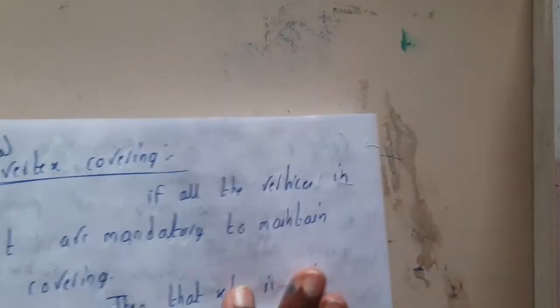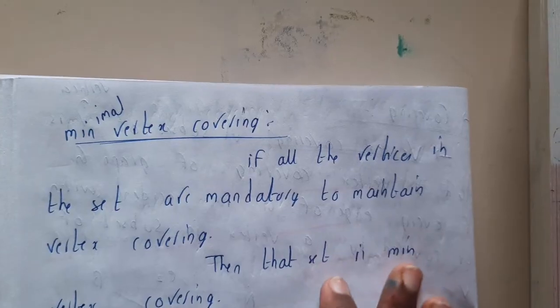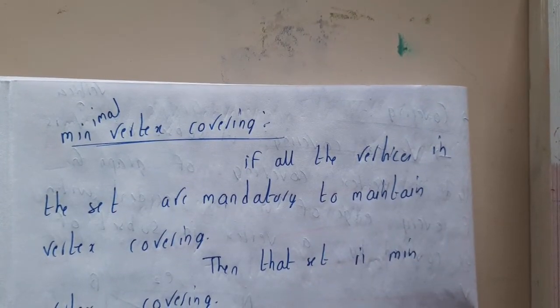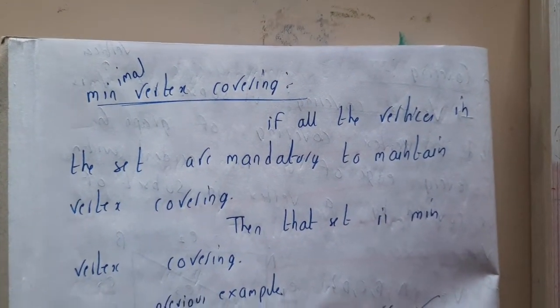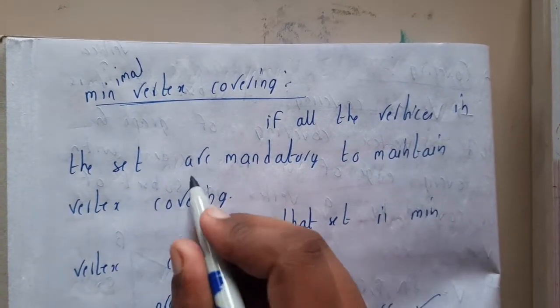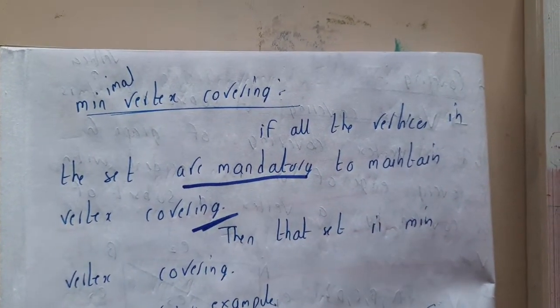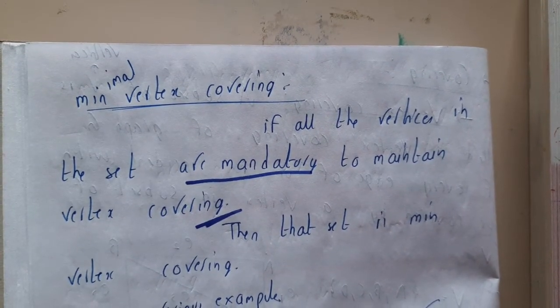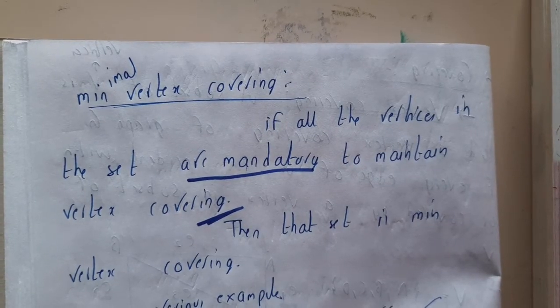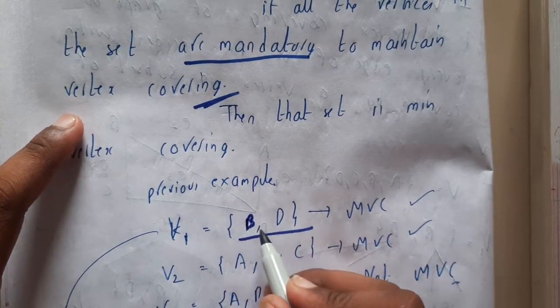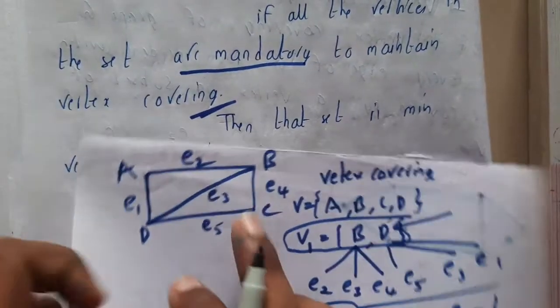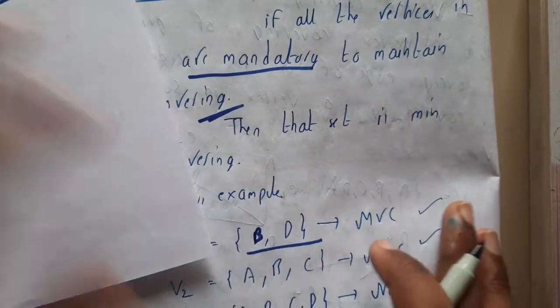Now let us go through minimal vertex covering. If all vertices in a covering set are mandatory — meaning removing any one of them causes the property to be lost — then that set is called a minimal vertex covering. For example, with {b, d}: if we remove b, edges e1 and e5 are uncovered; if we remove d, some edges are also missed. So both b and d are mandatory, making {b, d} a minimal vertex covering.